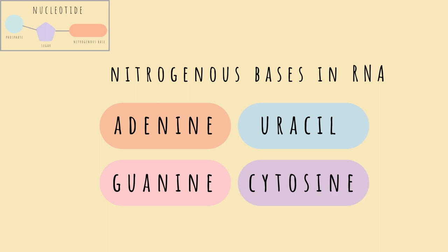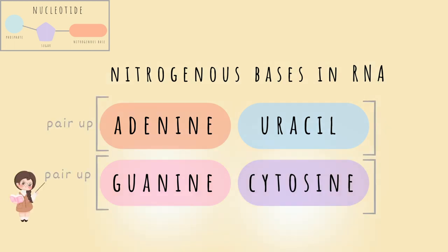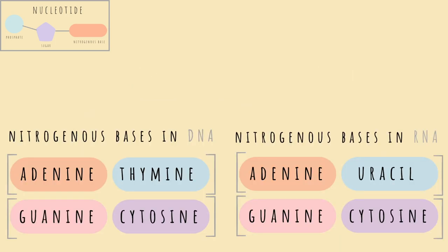In RNA, adenine and uracil pair up, as do guanine and cytosine. The only difference between DNA and RNA bases is that DNA has thymine and RNA has uracil. Thymine is only found in DNA, and uracil is only found in RNA.